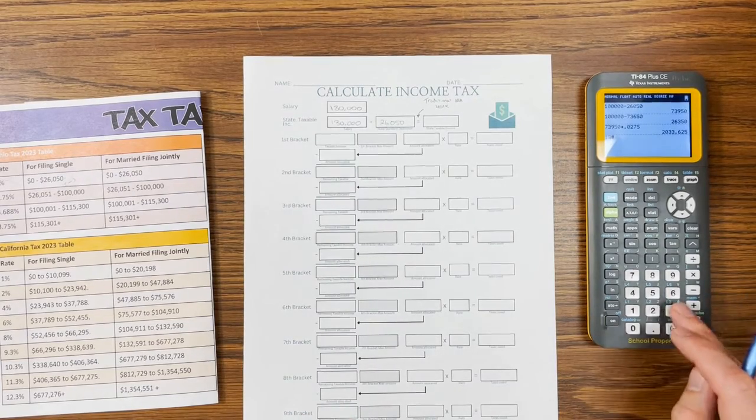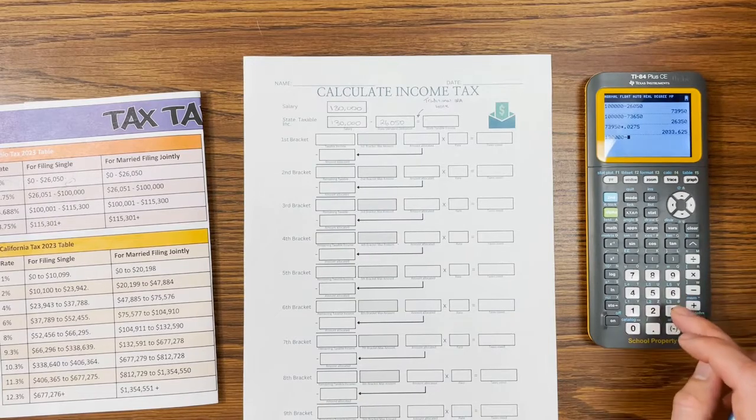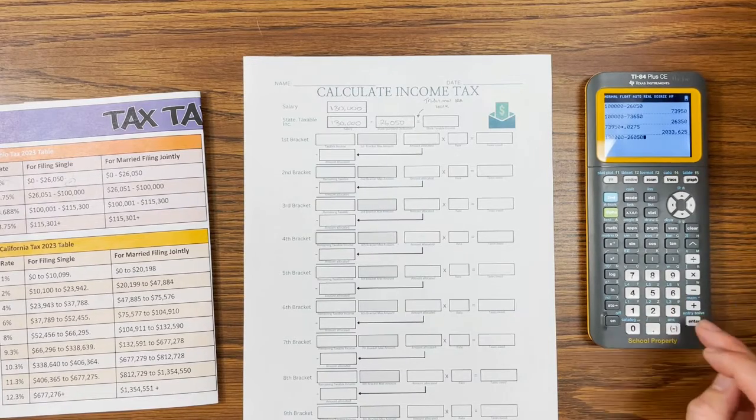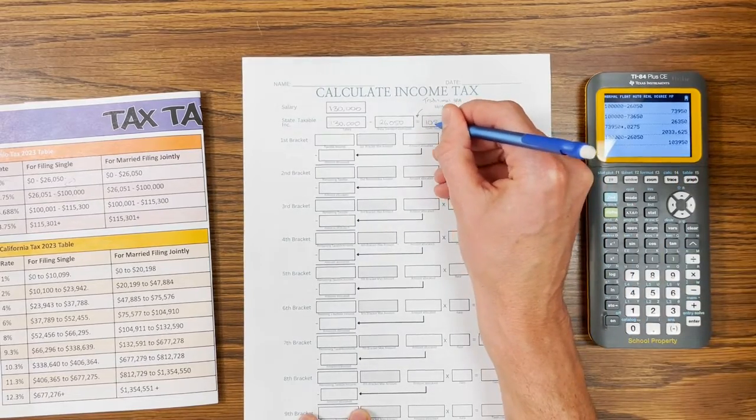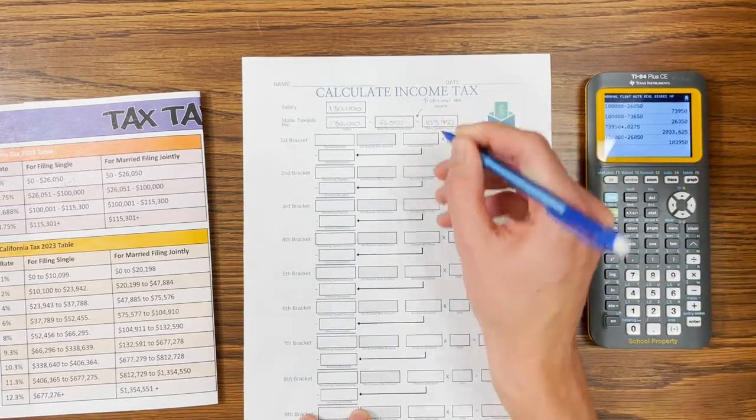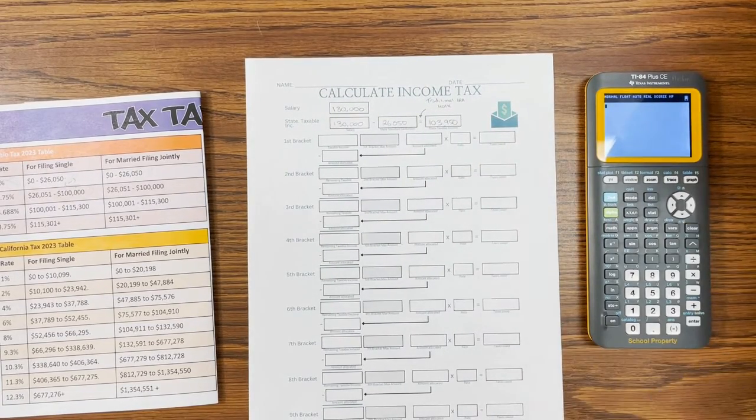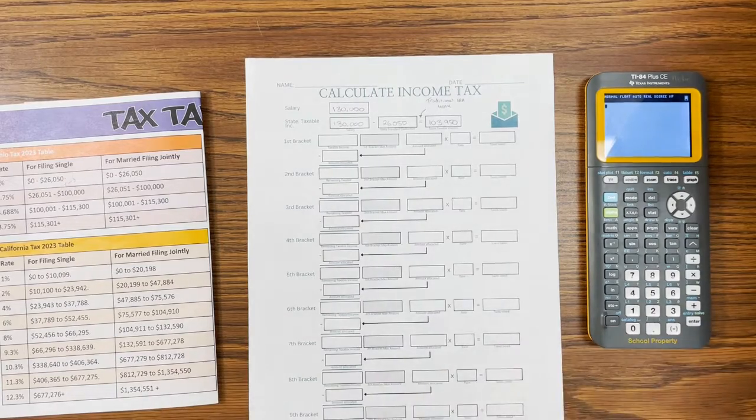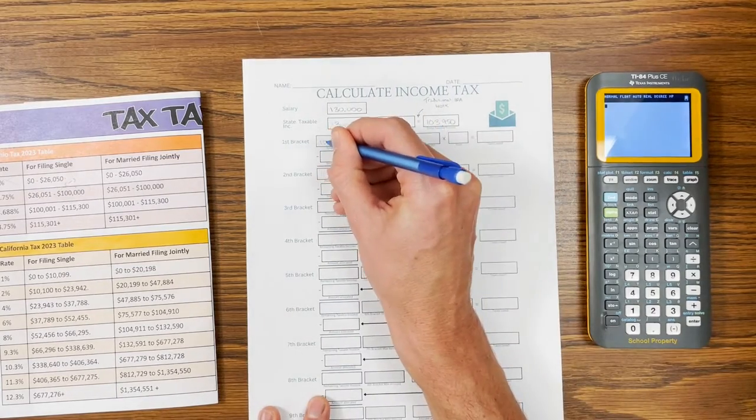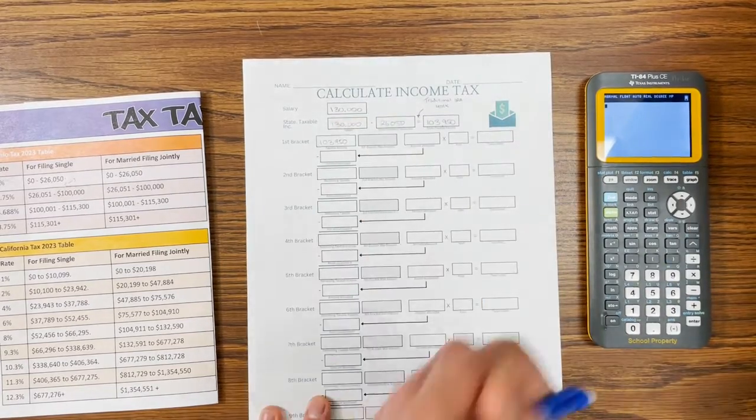Alright. So let's do that. So $130,000 minus $26,050. So we get $103,950. And that is our taxable income for state of Ohio. So that number is going to come down, $103,950. So that's our taxable income.